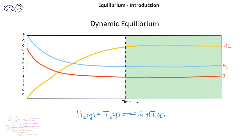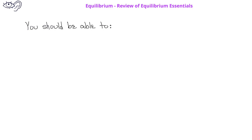Once we get to equilibrium, represented here by the dashed line in the middle of the graph, we see that the concentration of HI, the concentration of I2, and the concentration of H2 remain relatively constant. Despite the fact that the concentrations remain constant, it's important to remember that, because this is a dynamic equilibrium, the forward reaction and the reverse reaction are still taking place.